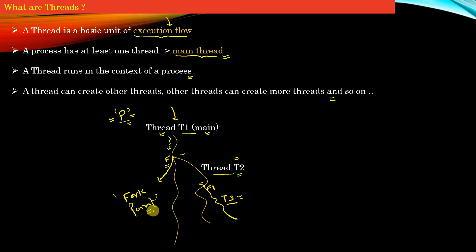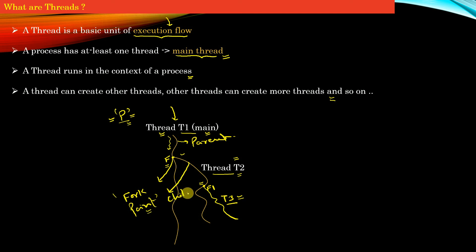A fork point is where a new thread is created by the parent thread. A thread which creates a new thread is called the parent thread, whereas the thread which is created is called the child thread. In the next lecture video we will quickly create our hello world multi-threaded program.